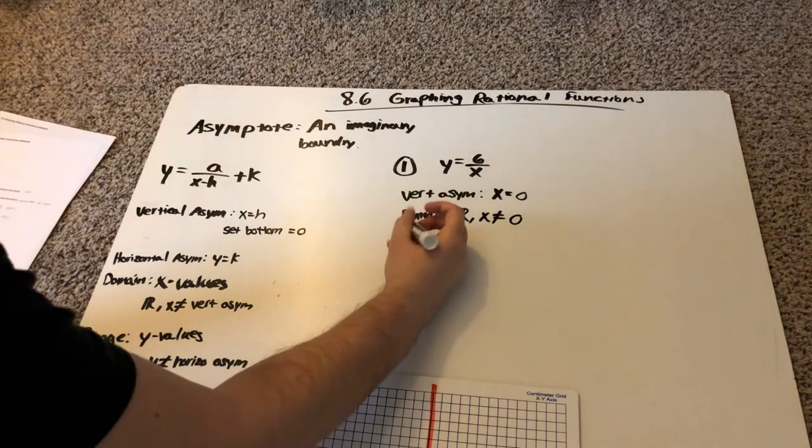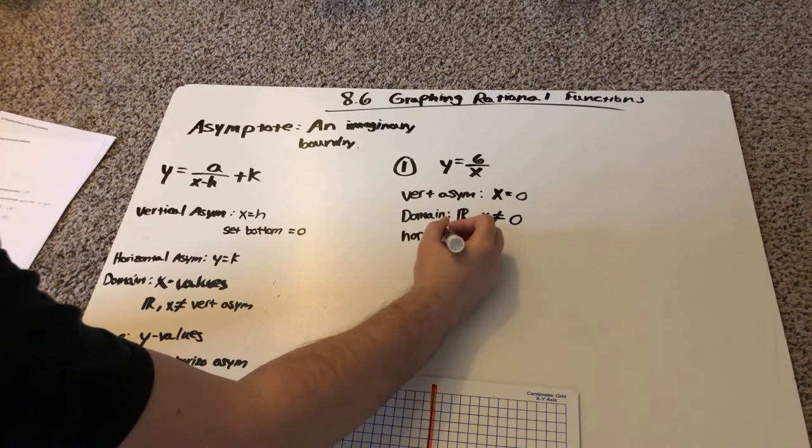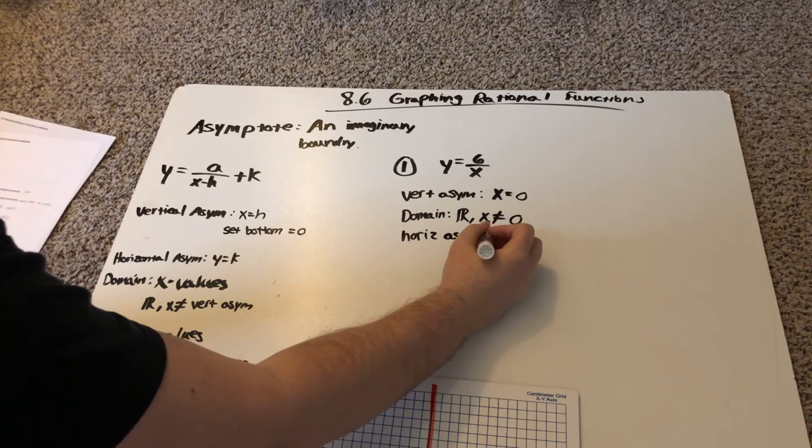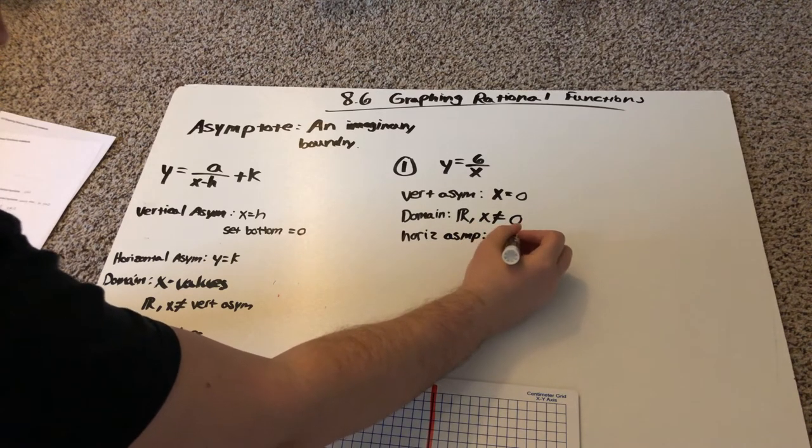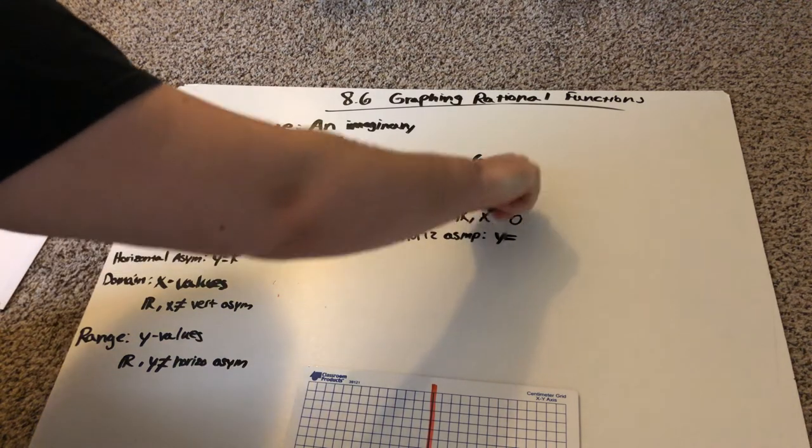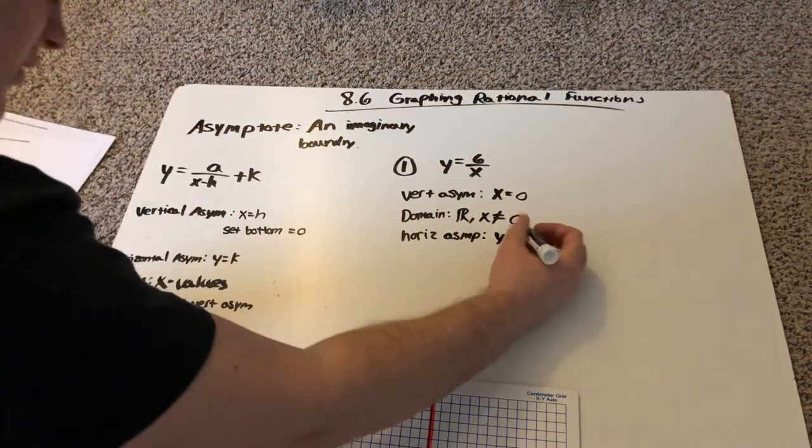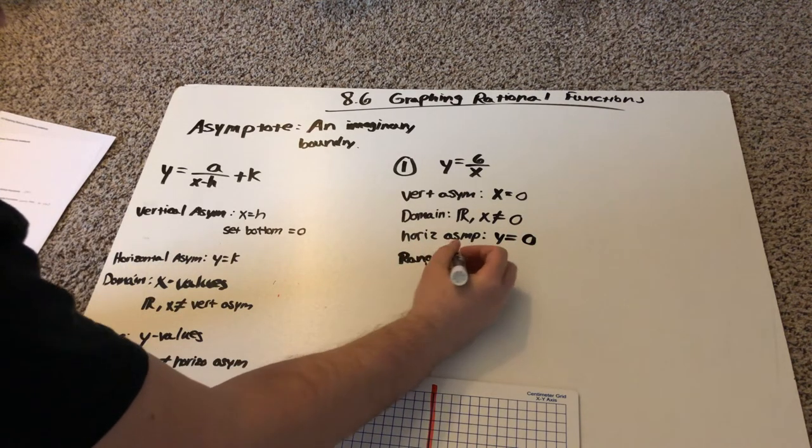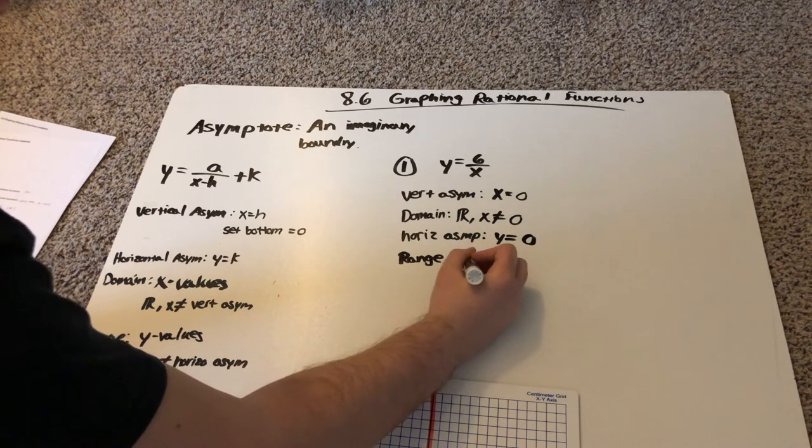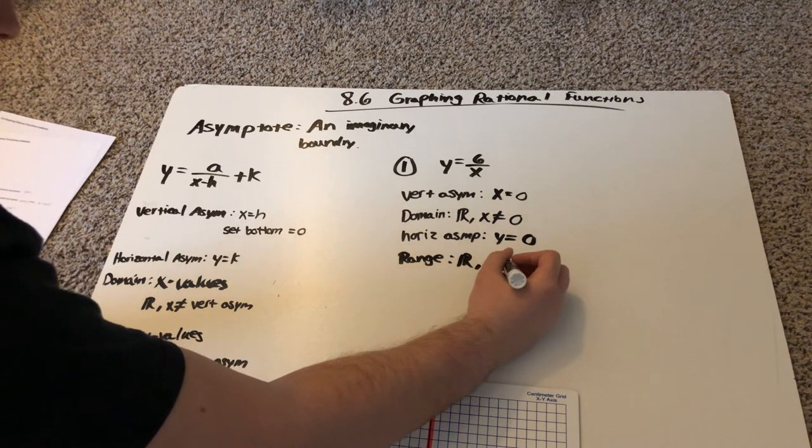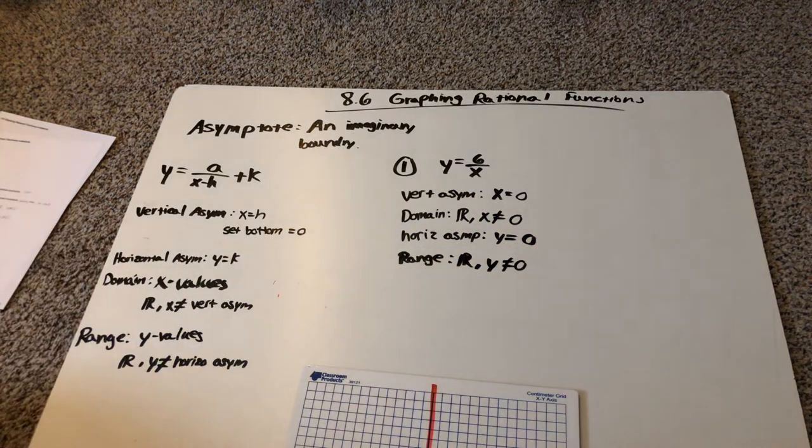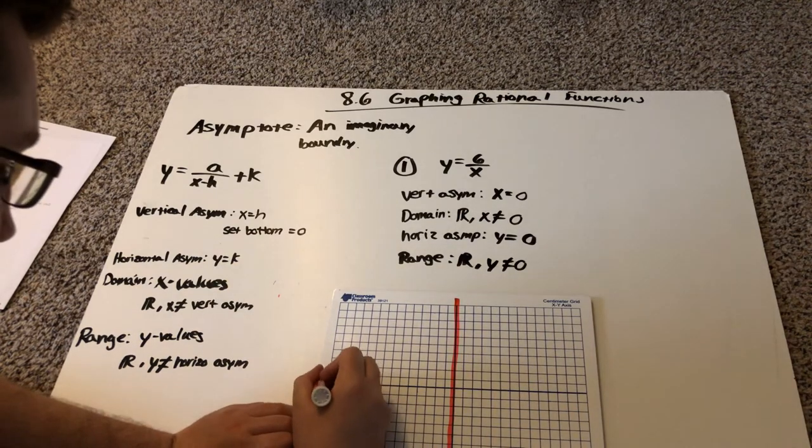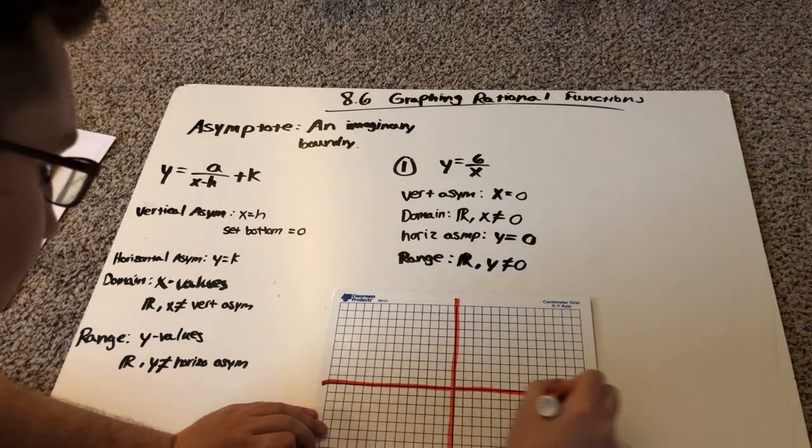And my horizontal asymptote is going to be y is equal to the number that's being added or subtracted here at the end. I don't have anything, so I'm going to put y equals zero. So my range, because the range is all y values, I'm going to say all real numbers except whatever the horizontal asymptote is, so y cannot be zero. So I'm going to go on my graph and draw a line there.